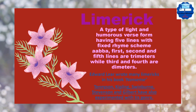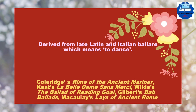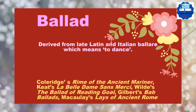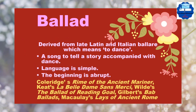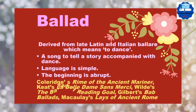The next sub-genre of poetry that we are going to discuss is Ballad. The name was derived from Late Latin and Italian ballata, which means to dance. It is a song to tell a story, accompanied with dance. Its language is simple and its beginning is abrupt. Distinguished works among ballads are Coleridge's Rime of the Ancient Mariner, Keats's La Belle Dame Sans Merci, The Ballad of Reading Gaol, Gilbert's Bab Ballads, and Macaulay's Lays of Ancient Rome.